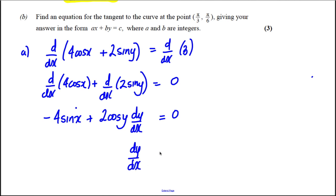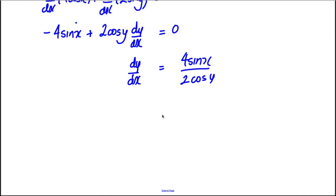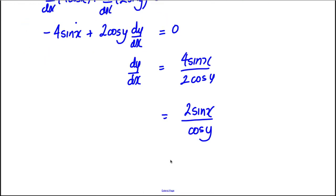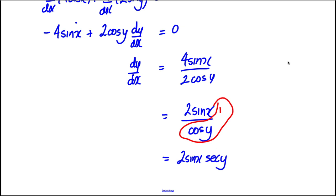So therefore dy/dx is going to be equal to 4sin(x) over 2cos(y), which is clearly 2sin(x) over cos(y). Dividing both sides by 2, this is equal to 2sin(x)sec(y), because 1 over cos(y) is the same as sec(y). So dy/dx is, as required, 2sin(x)sec(y).